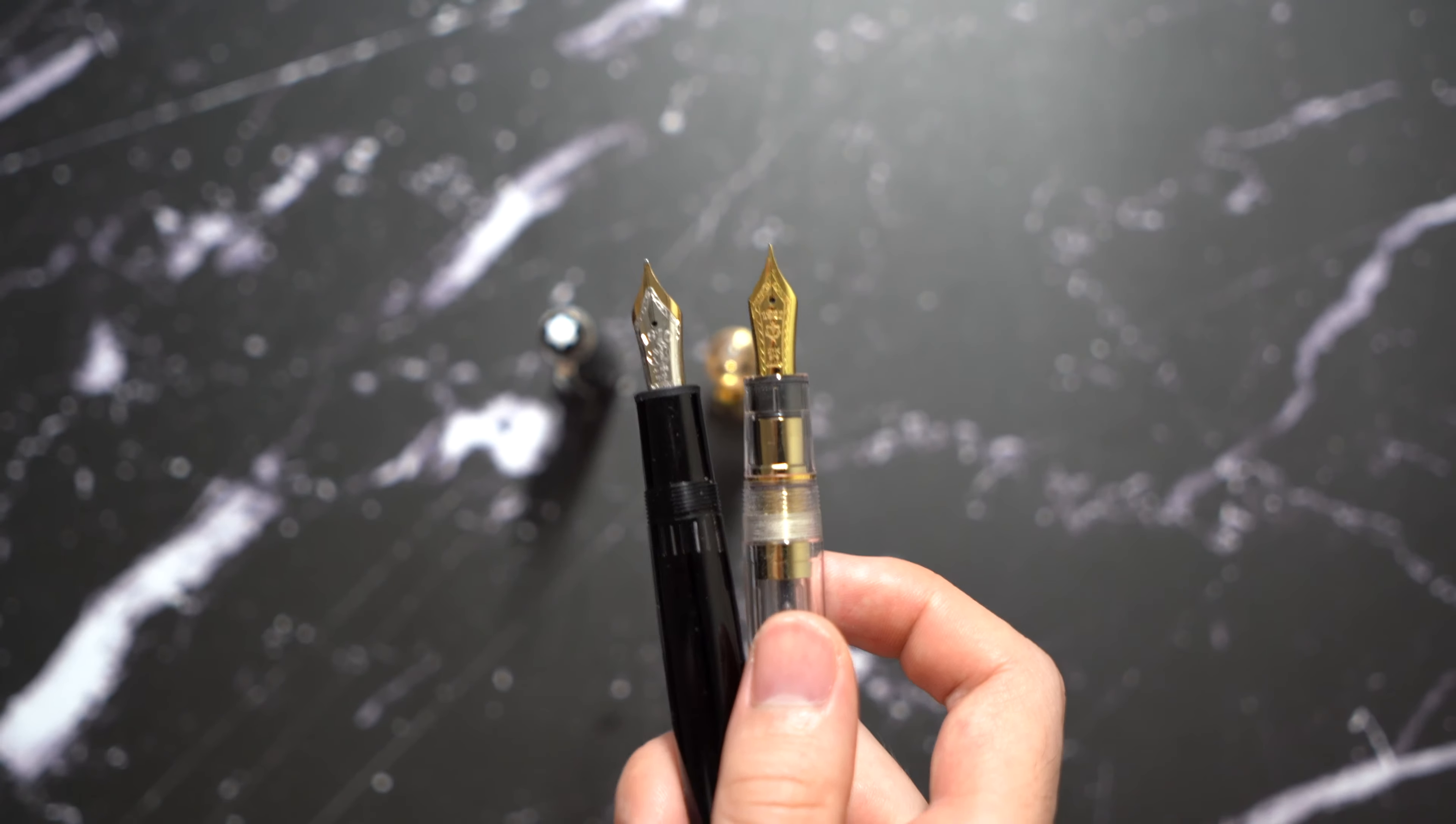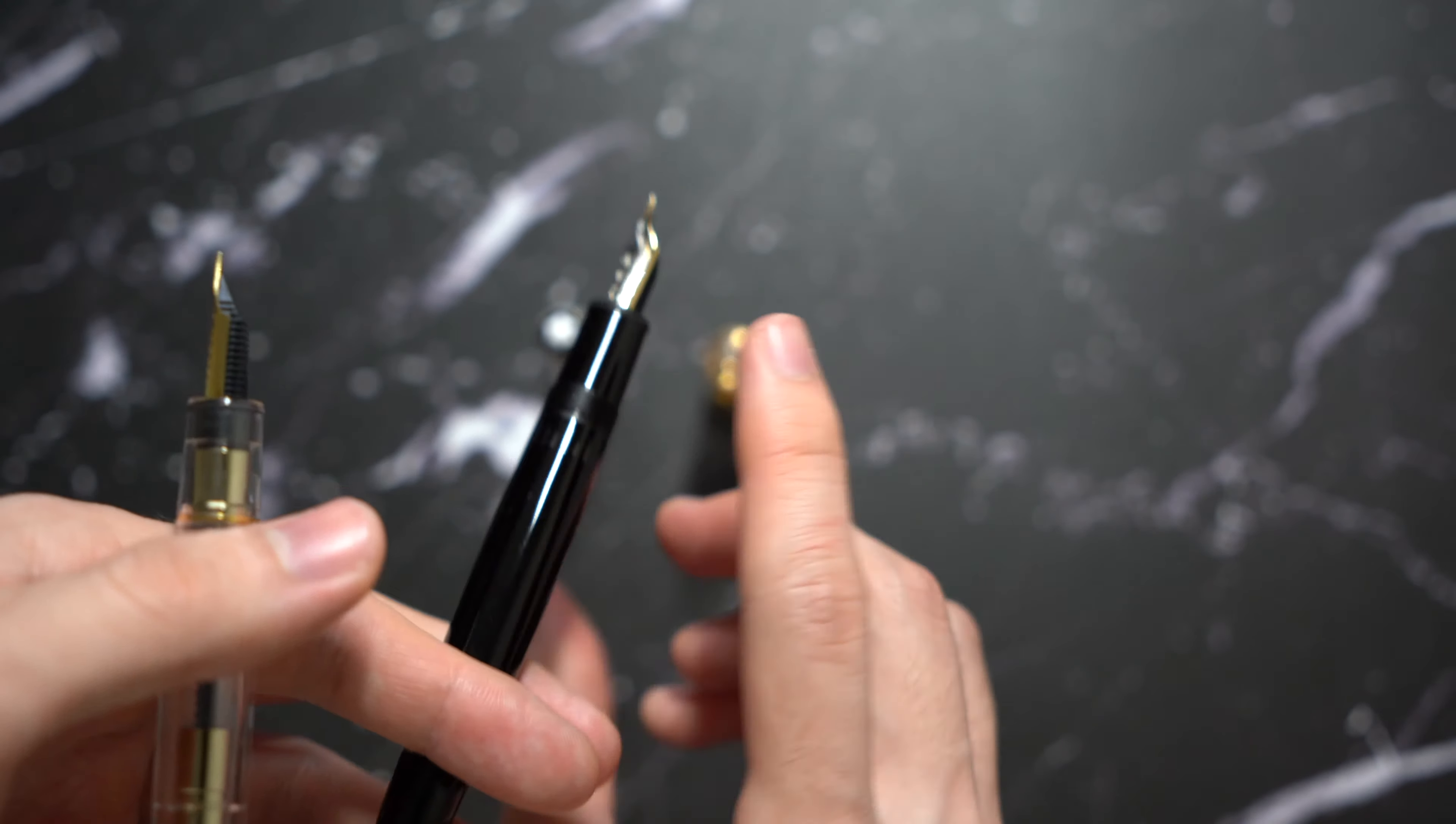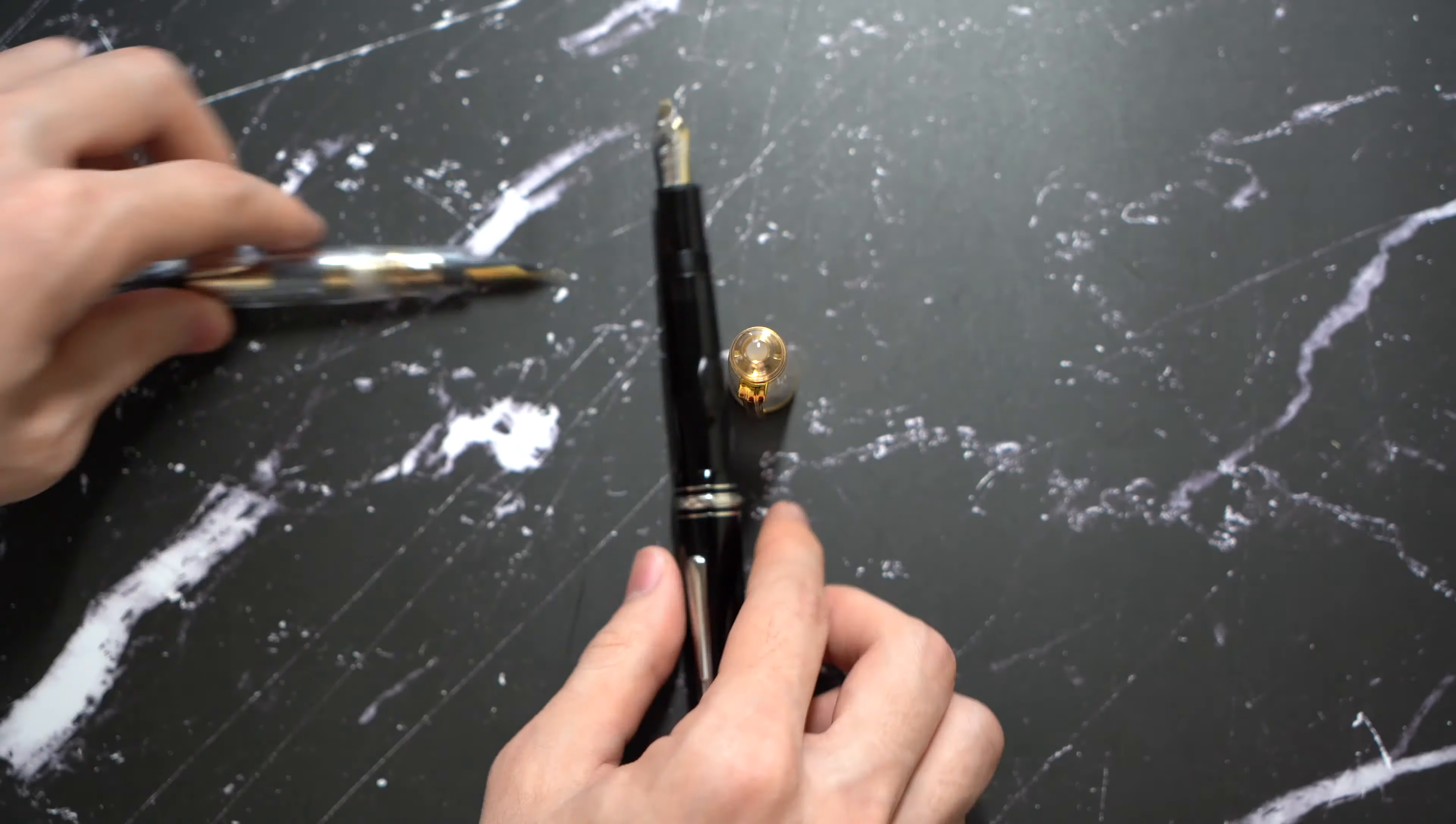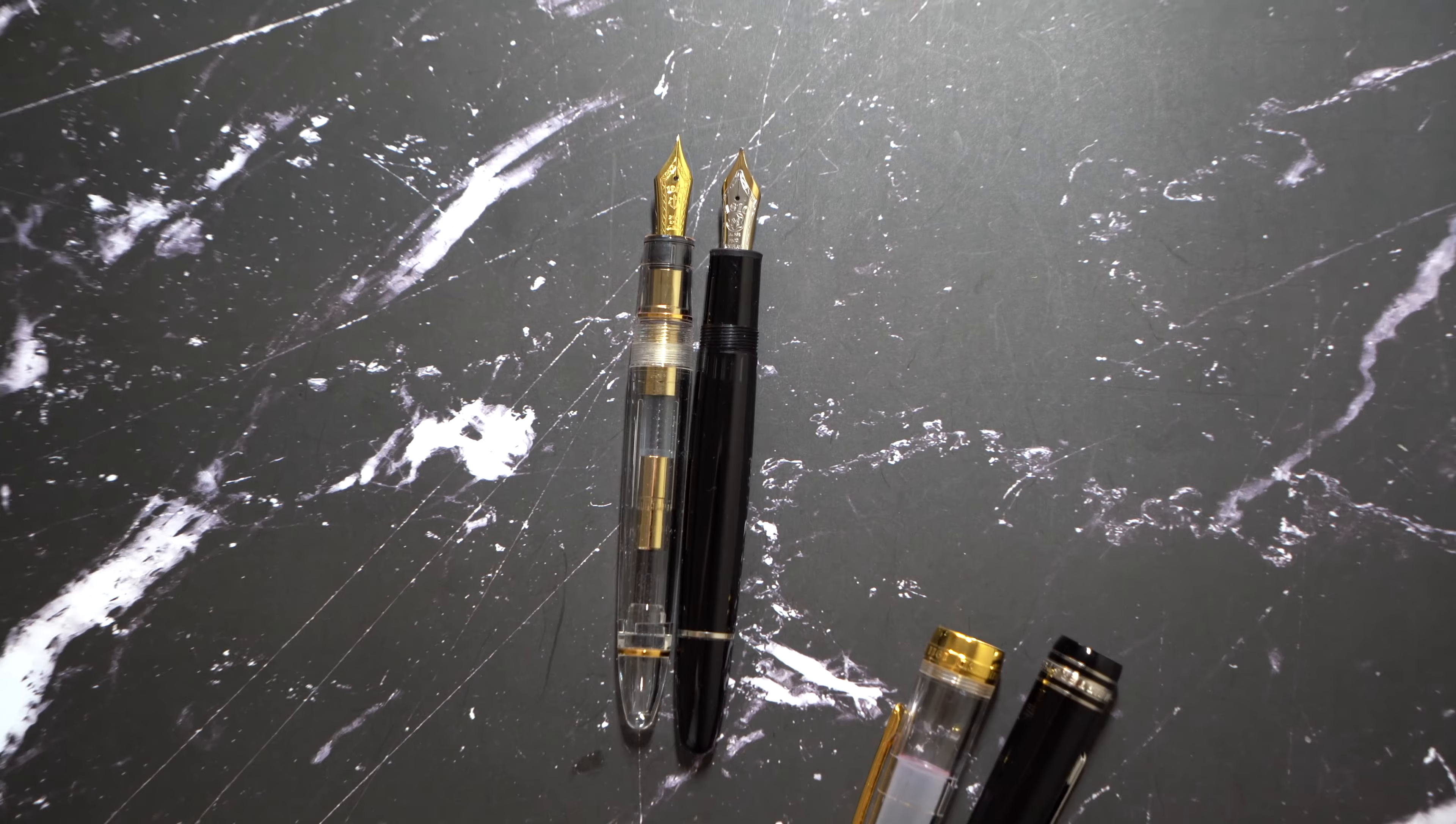They both have plastic feeds. The 1911 Large is a monotone nib whereas the 146 is a two-tone nib. As you can see in terms of holding it, the 1911 Large is very well balanced with the cartridge converter and it's very lightweight. So is the 146 because it's a plastic piston, so it's also lightweight and they're both made out of fully resin pens. When you post them, as you can see the 146 is a little bit longer but not that much. And when it's uncapped, the 146 is slightly longer as well.